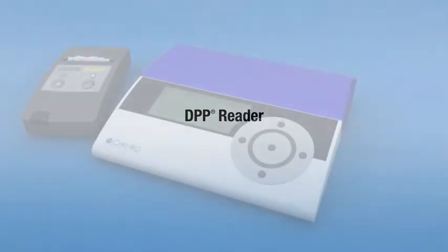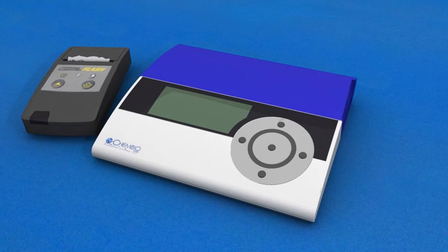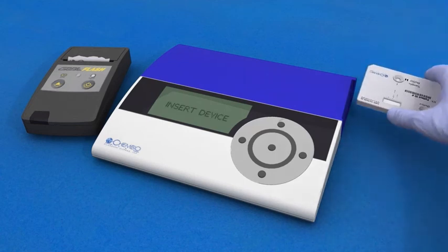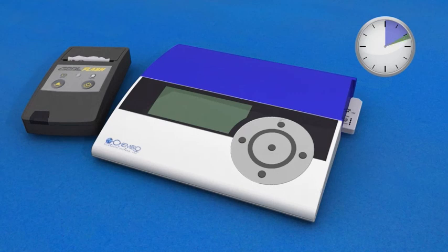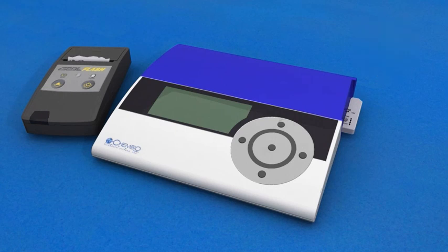DPP Reader: You can also use the DPP Desktop Reader to interpret your results. Start by pressing the black button on the back side of the reader to turn it on. When the display reads READY, insert the DPP test into the slot on the right side of the reader at least 10 minutes but not later than 15 minutes after adding the running buffer from the red cap bottle to well 2. The reader will display the word TESTING for a few seconds before the results are shown.